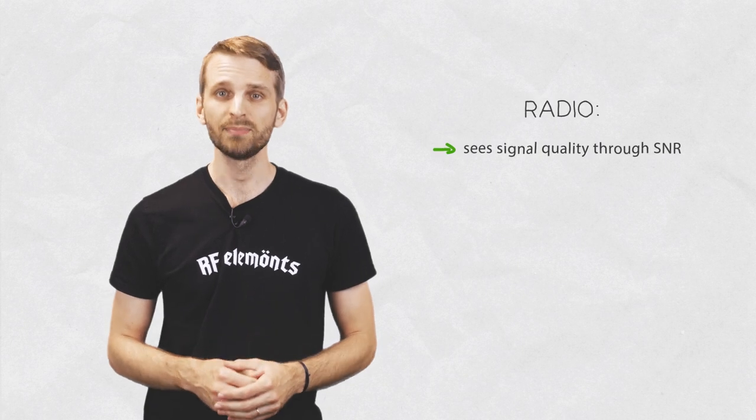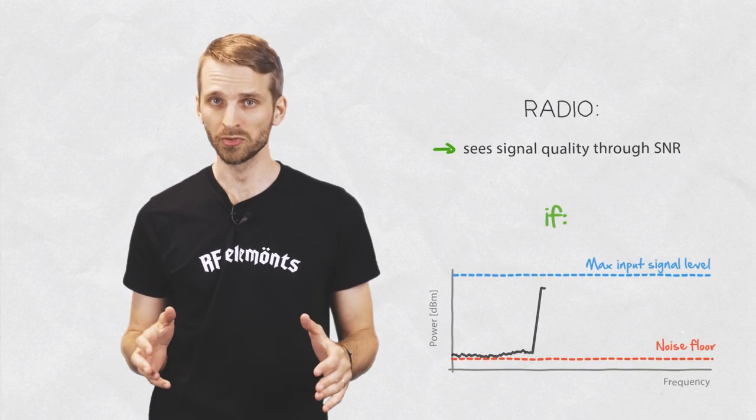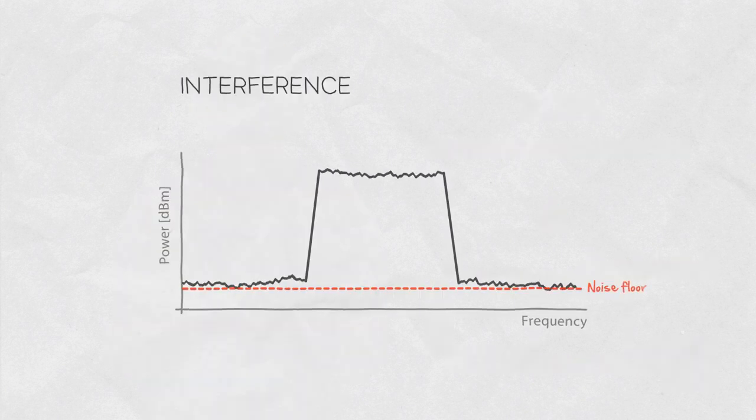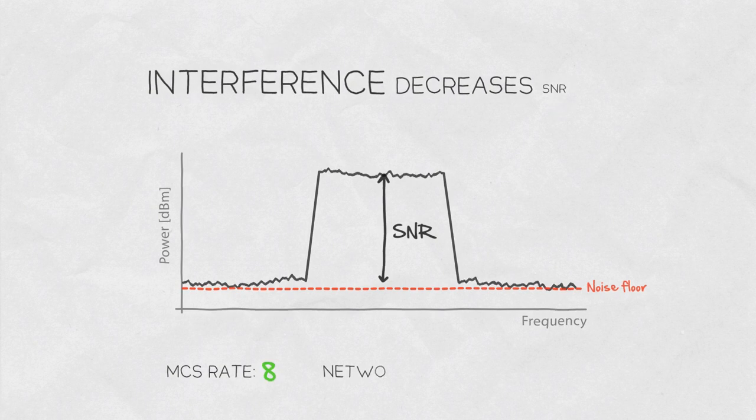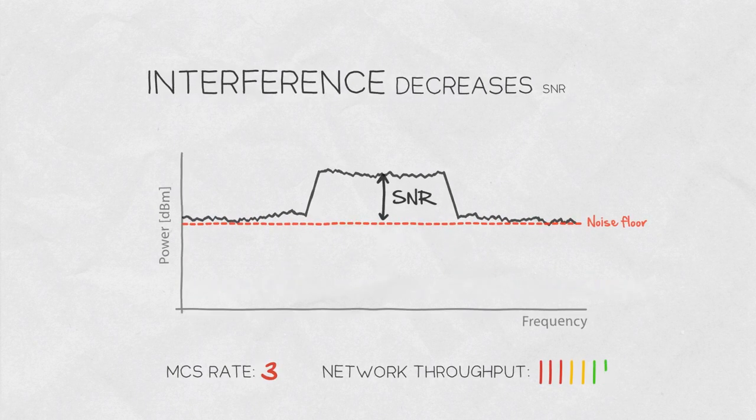Your radio sees the signal quality primarily through the SNR, given that the signal is between the noise floor and the maximum power the radio can work with. Interference decreases the SNR your radio is working with. Lower SNR means lower MCS rates seen as decreased overall throughput at the user end.